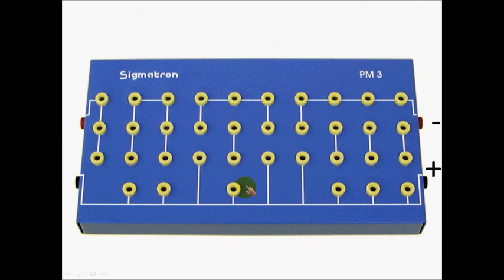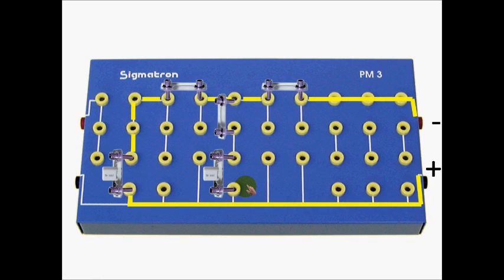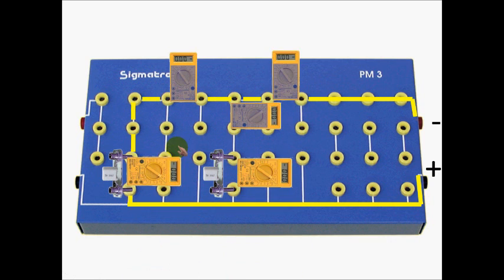Now looking at the Sigmatron board, I'm going to show you again one option where we can hook them up. And as you can see again, we have ourselves a parallel circuit with a branch here and a branch there, and I'm going to get rid of some of these jumpers and show you where I can put my ammeters and voltmeters.